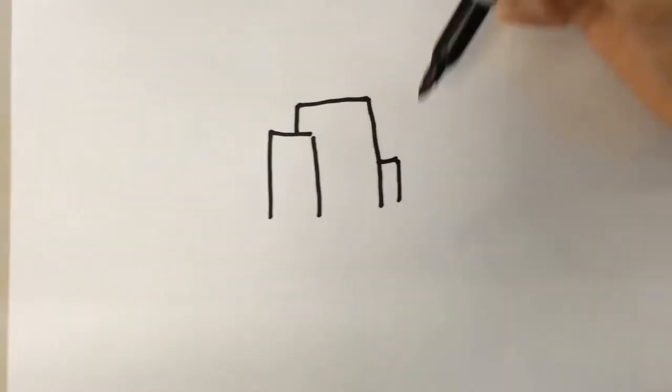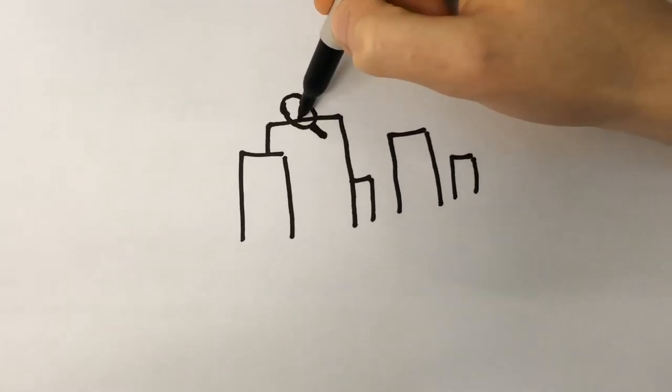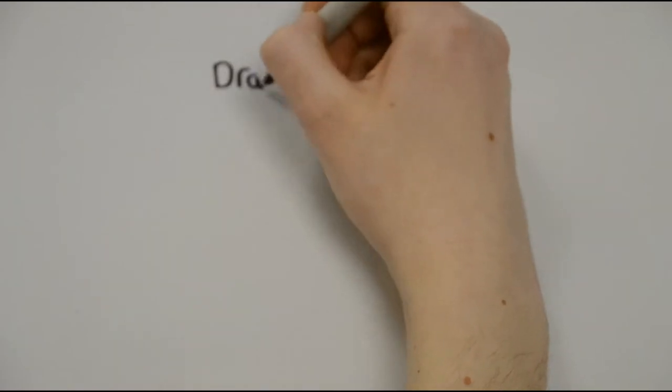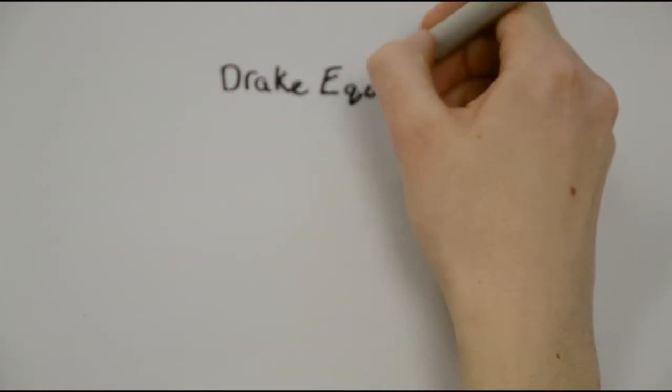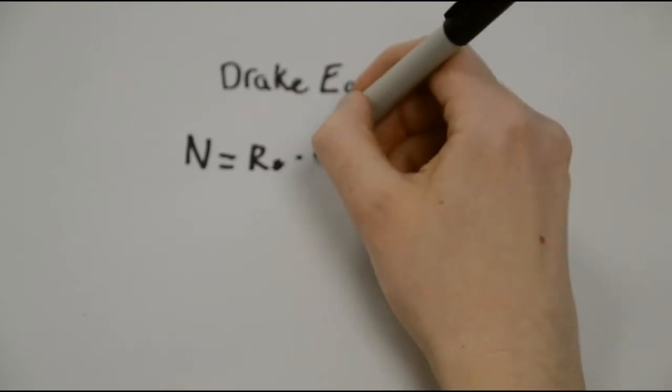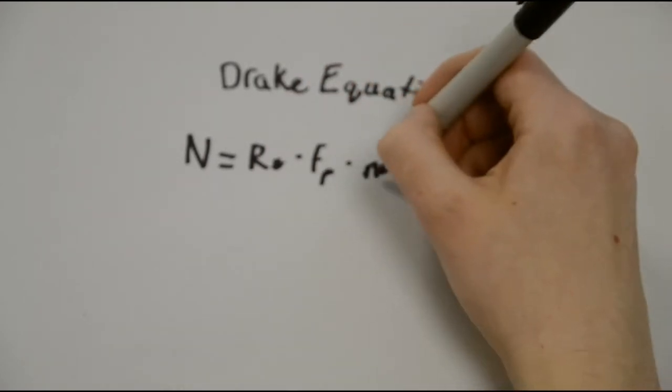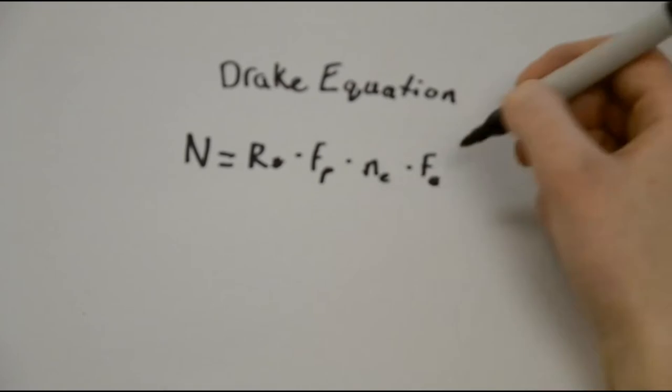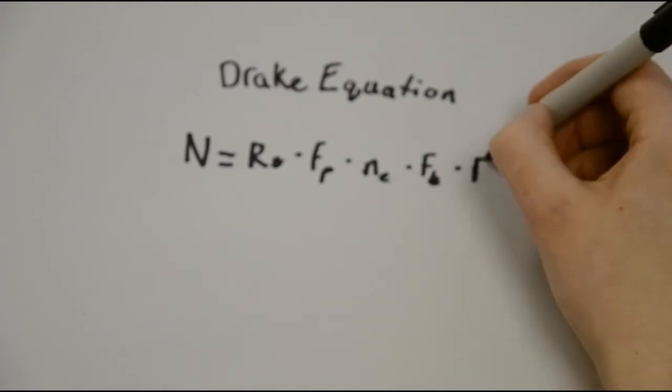But is there likely to be another civilization out there for us to detect? The answer to this question is summed up nicely by the famous Drake Equation. Don't worry, I'm not about to launch into complex mathematics. This equation describes the number of civilizations in a galaxy which are able to communicate. It has 7 terms which are multiplied together to give us the answer, so all we have to do is work it out.